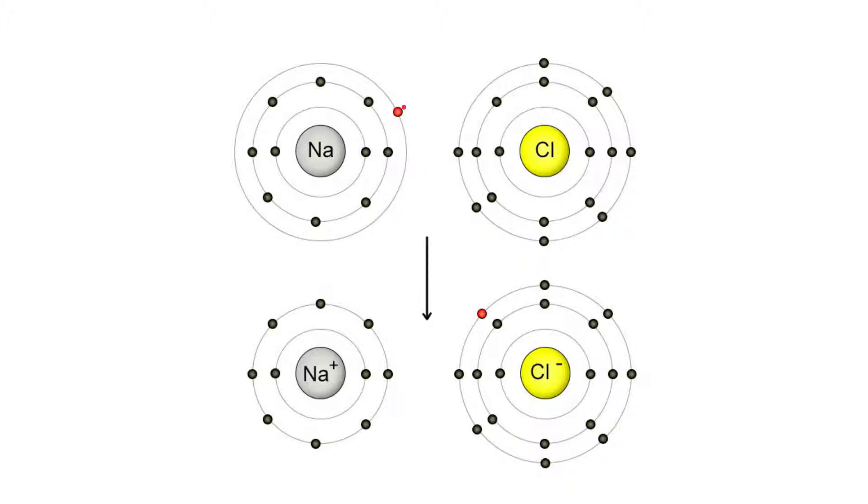However, most atoms want to have a full outer shell. Now in this atom of sodium, you can see that it has one electron in its outermost shell, so it's not full. In this atom of chlorine, it has seven electrons in its outermost shell. So it's missing one electron and doesn't have a full outer shell.